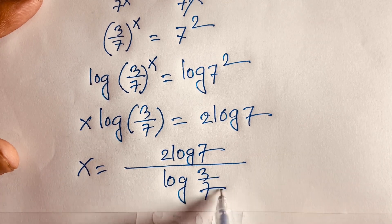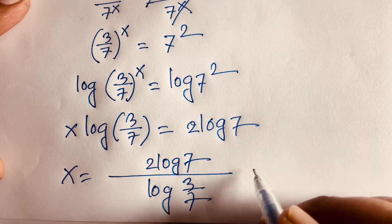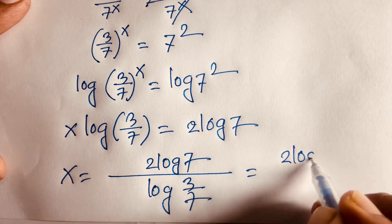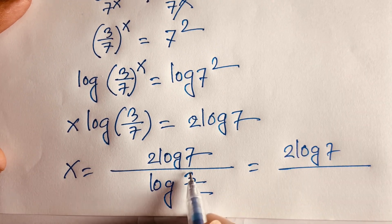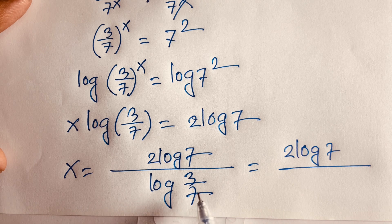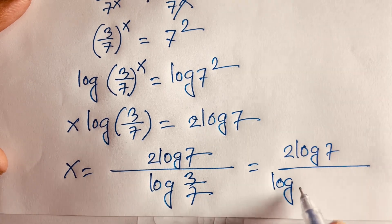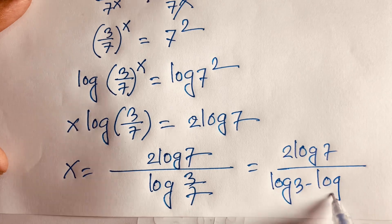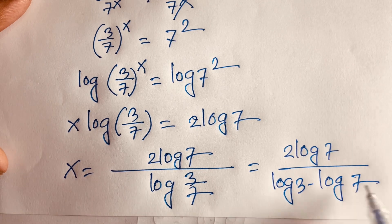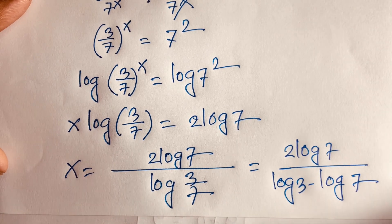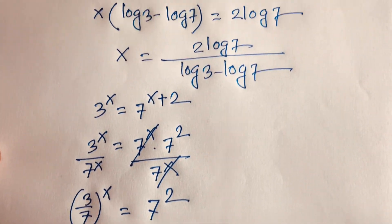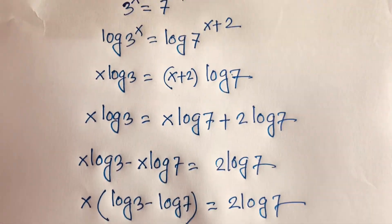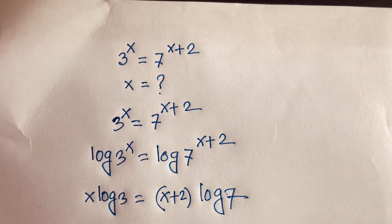We know that log a over b is equal to log a minus log b. According to this rule, log 3 over 7 is equal to log 3 minus log 7. So this is our final answer. Thank you all. If you enjoyed this video please subscribe to the channel and like this video. Goodbye, take care.